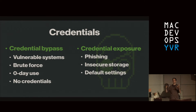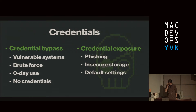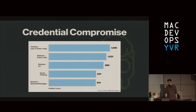Then there's credential exposure — phishing, which everyone knows about at this point; insecure storage, where credentials are stored somewhere easily accessible; and default settings on IoT devices or Wi-Fi routers that never get their credentials changed. Looking at how compromised credentials are obtained: stolen credentials via hacking, malware that grabs and exports credentials, command-and-control malware, phishing still in the top five, and spyware or keyloggers that physically grab passwords as users type them.